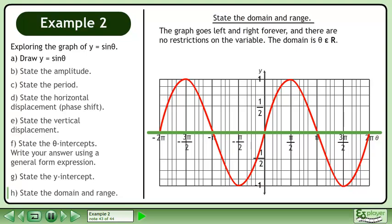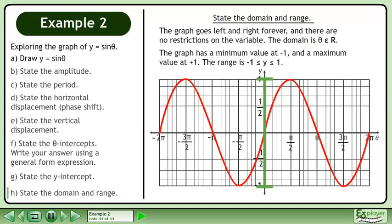The graph goes left and right forever, and there are no restrictions on the variable. The domain is theta belongs to the set of real numbers. The graph has a minimum value at negative 1 and a maximum value at positive 1. The range is negative 1 is less than or equal to y, which is less than or equal to 1.